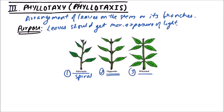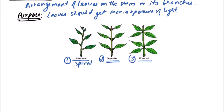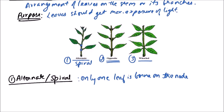First of all, we will discuss the alternate or spiral type. In this type of phyllotaxy, only one leaf is born on the node — we can observe that at a node only one leaf is present.